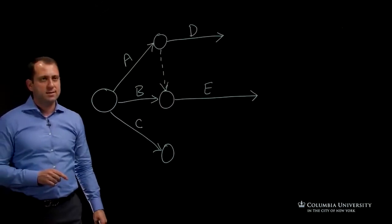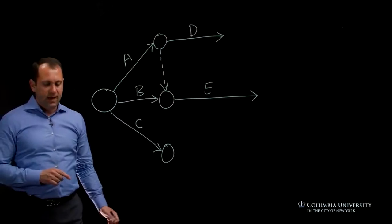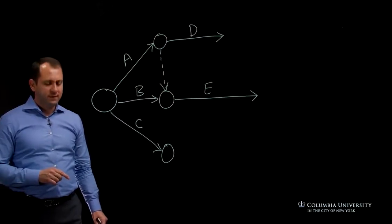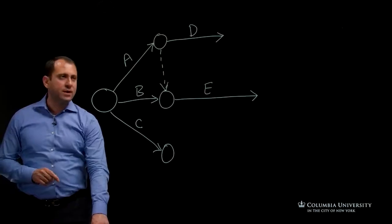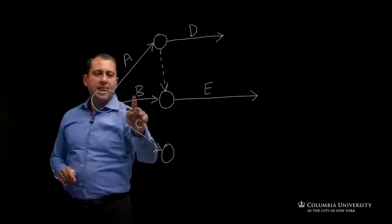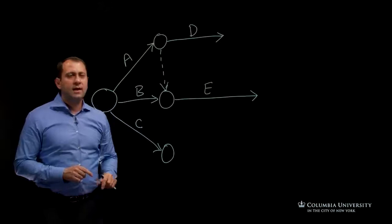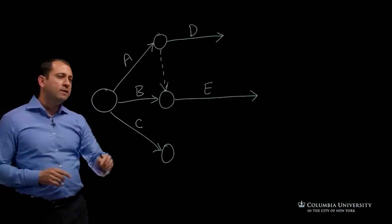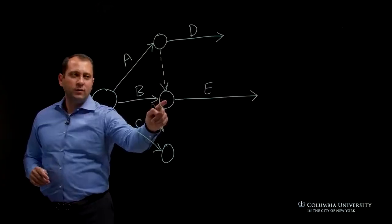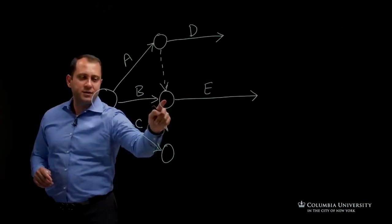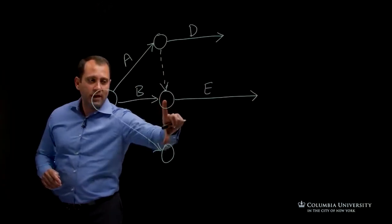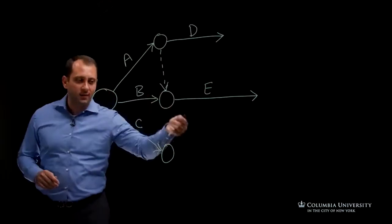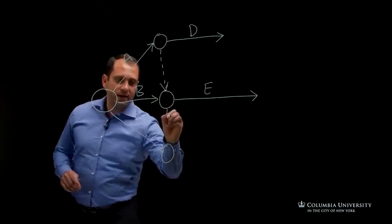The last activity then would be F, which has three predecessors: A, B, and C. In that case, I would look at it as this node when A and B finish, and then I want to link it with C when it finishes to start F.